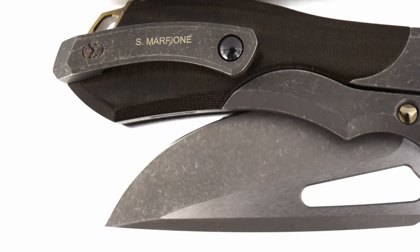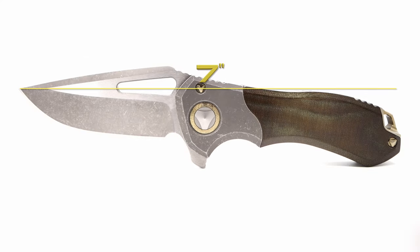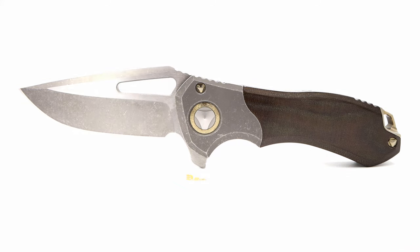Lock bar and pocket clip. The green micarta inlays have a depth to them with their tiger-striped appearance. The overall length of the flipper is seven inches, with a weight of 3.9 ounces.